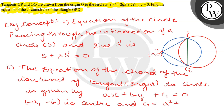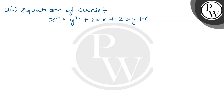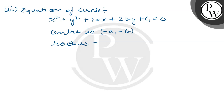The second and third key concepts: the tangent equation from external point (a, b) to a circle is ax + by + c₁ = 0, where the center is (−a, −b). For the circle x² + y² + 2ax + 2by + c₁ = 0, the center is (−a, −b) and the radius is √(a² + b² − c₁).